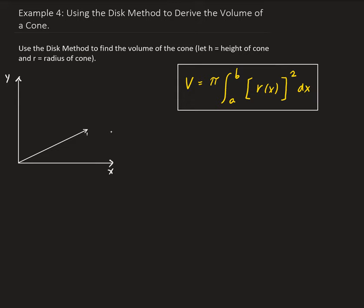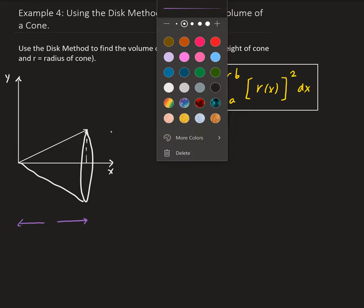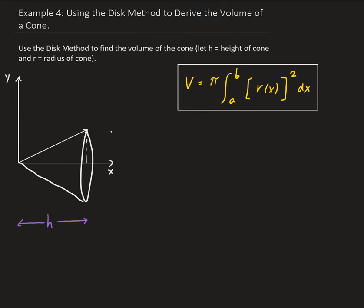Here's the region being defined. We're going to take this and rotate around the x-axis. We're going to assume that this cone has a height of h, and we're going to call this r — this is the radius of our cone.